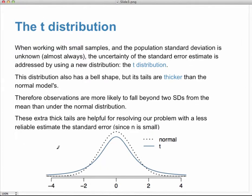We're going to replace the standard normal N(0,1) with a new distribution called the t-distribution, because the t-distribution works well with small samples. Even if we know the original distribution was approximately normal, with small samples we don't get a good estimate of the standard deviation of the sampling distribution of x-bar — the uncertainty in that standard error is addressed by the t-distribution.